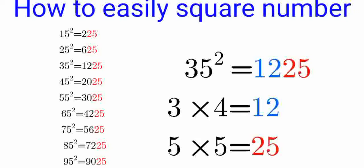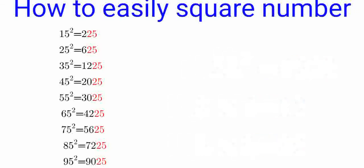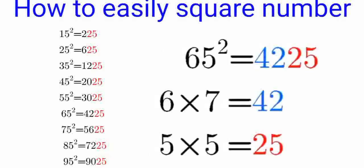Here, you try 65 squared. 65 times itself. How does it begin? By taking 6 times the next higher number, 7. Six times seven is 42, and how does it end? It always ends in 25. So there's your answer: 4225.